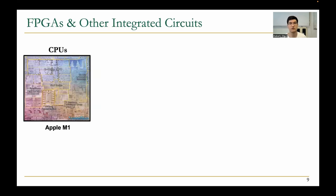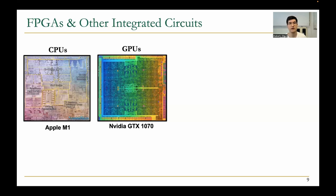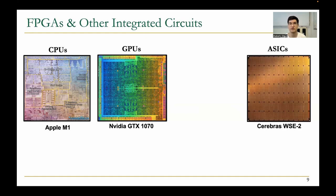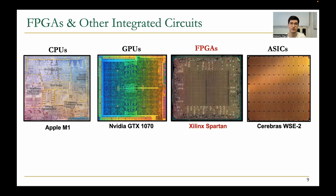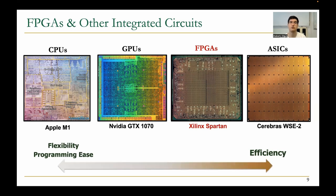We will see how FPGAs compare against other types of integrated circuits, like processors, graphics processing units, and application-specific integrated circuits. FPGAs would fall between ASICs and GPUs if we were to sort these types of integrated circuits according to a flexibility-to-efficiency scale.